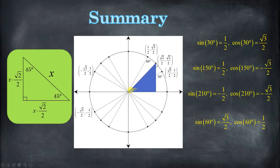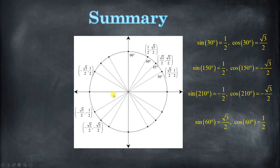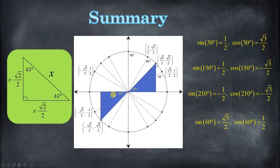We have that 45-degree triangle in the first quadrant. We could also make that 45-degree triangle a reference angle in the third quadrant. So 180 plus another 45 degrees gives us 225 degrees. That 225-degree angle is going to have a cosine of −√2/2 and sine of exactly the same value, −√2/2.